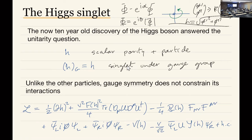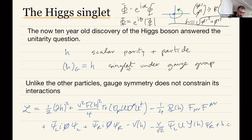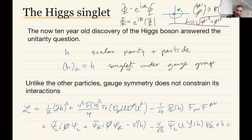Hopefully this will become clearer as the lectures proceed. The key point is that this little h has the following transformation properties: since there's no constraint on how it transforms, I have more freedom in writing terms in the Lagrangian. There are no constraints on how to couple it to other fields.